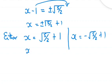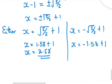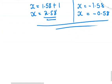So x is equal to root 5 over 2 plus 1, which gives x approximately 2.58. Or x is equal to negative root 5 over 2 plus 1, which gives approximately negative 0.58.